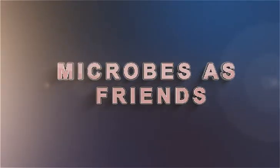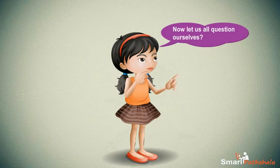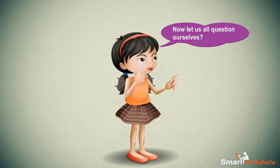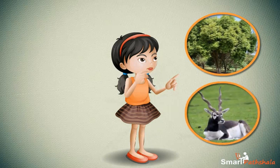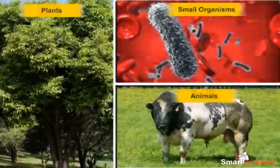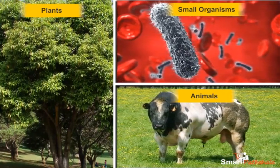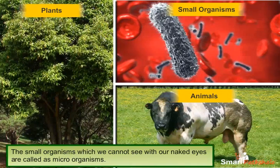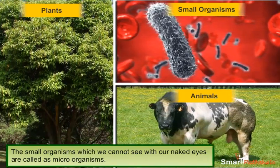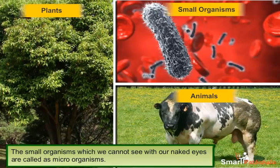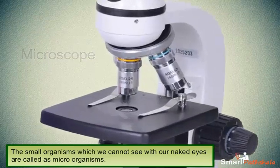Microorganism friend and foe - microbes as friends. Let us question ourselves about the different types of organisms present on the earth. The common answer is that there are two types of organisms, namely plants and animals. However, apart from plants and animals, there are some small organisms which we cannot find with our naked eye and we call them micro-organisms. We can see these organisms with the help of a microscope.